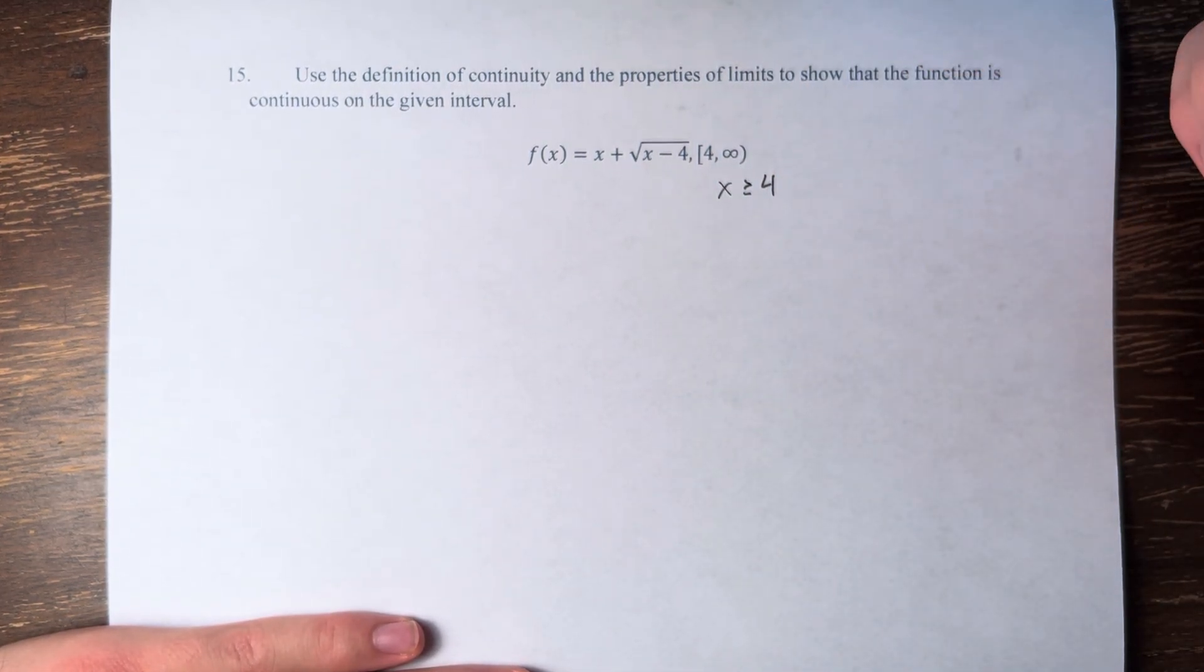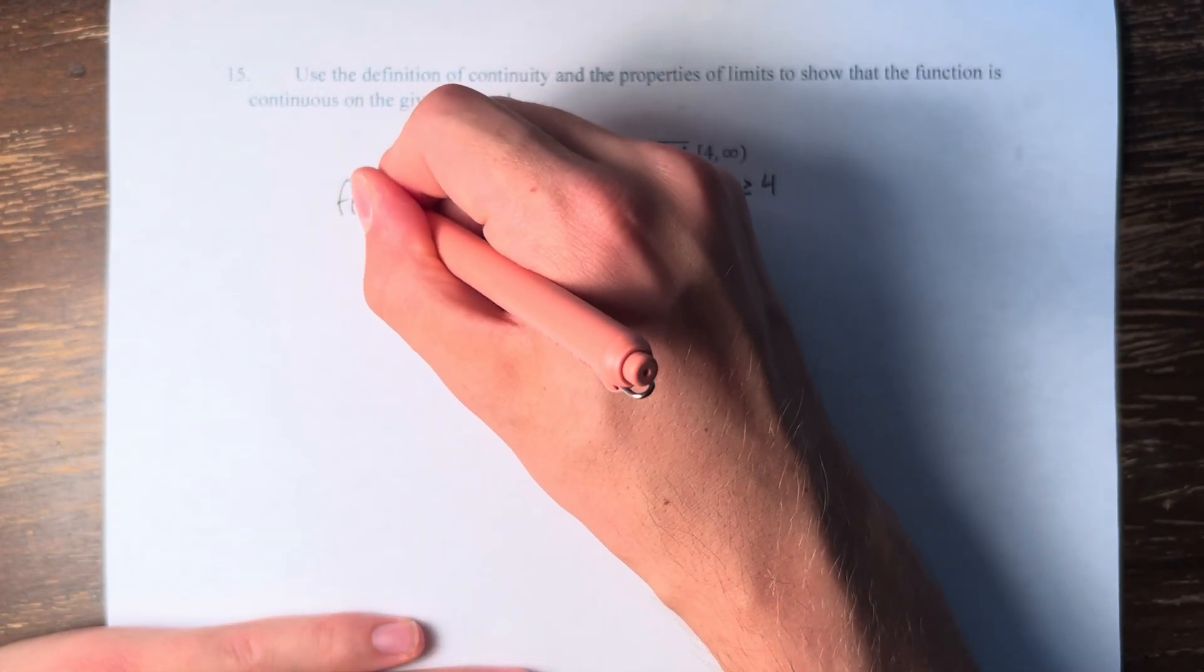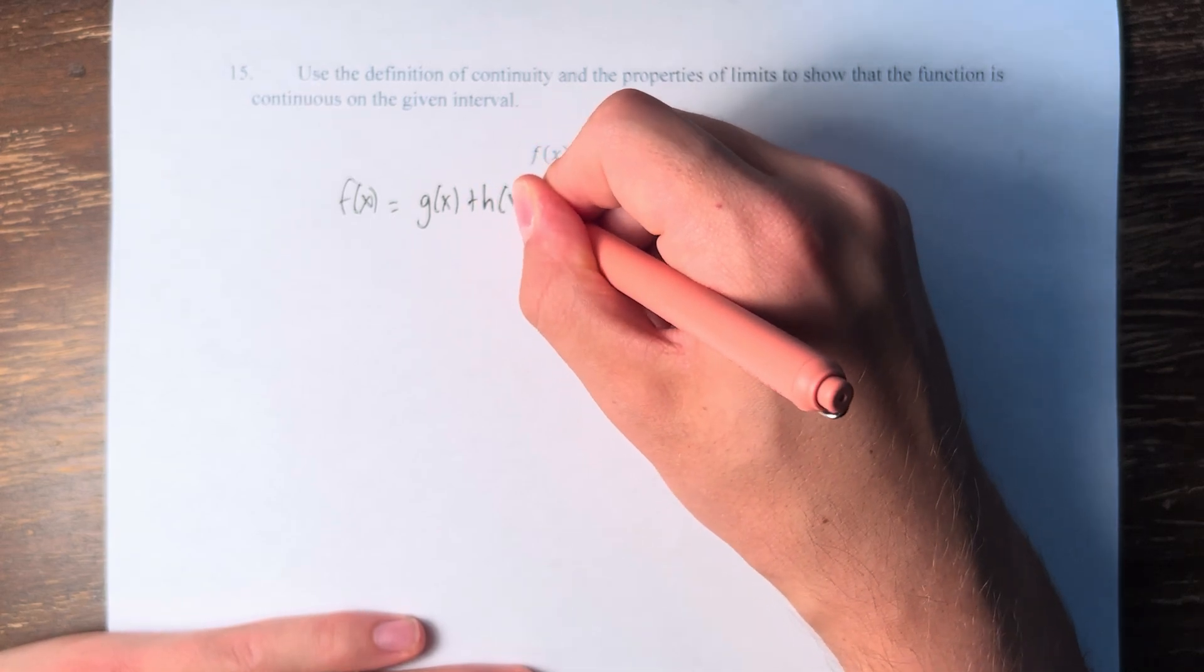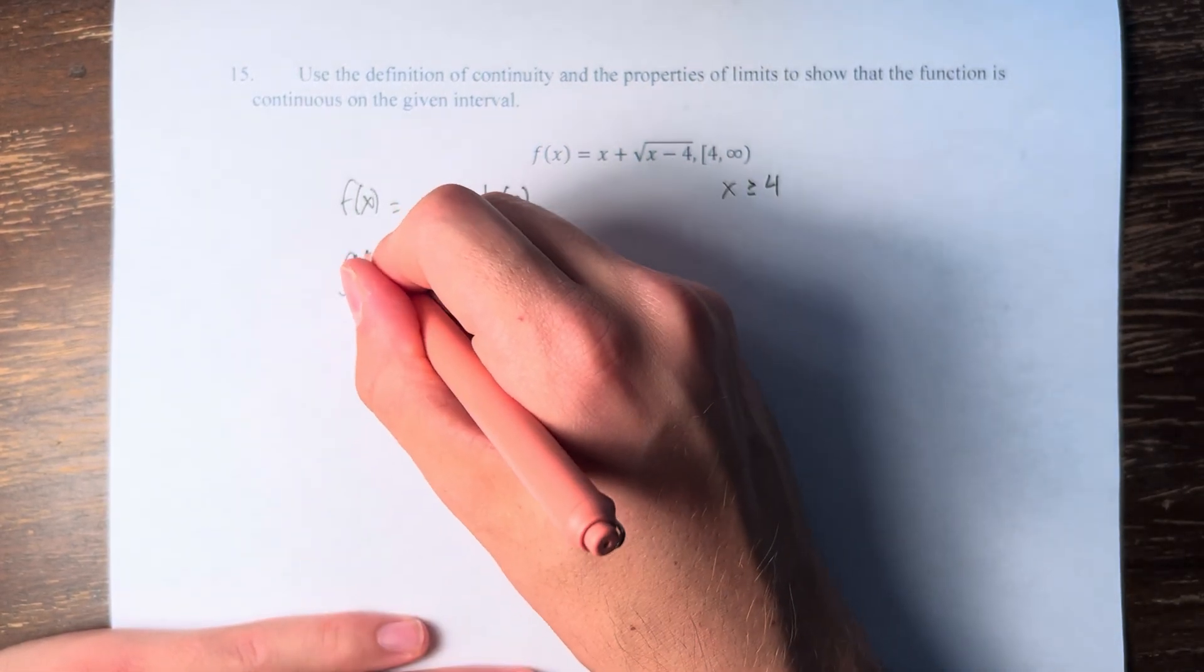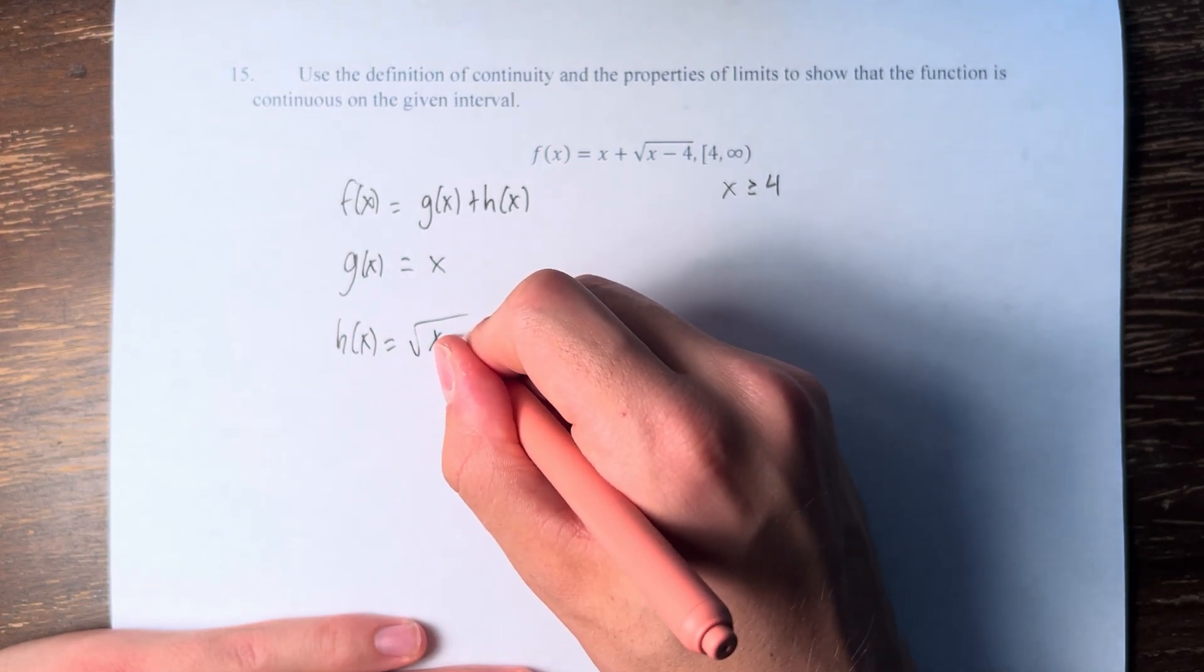So now, in order to determine that the function is continuous on this interval, let's split it into f of x is equal to g of x plus h of x, where g of x is x and h of x is the square root of x minus 4.